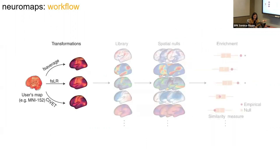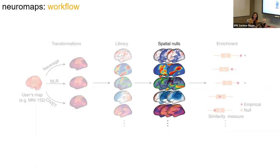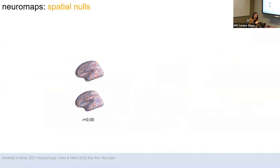At this point, let's say you have a data map you collected and you want to relate it to different phenotypes — gene expression, receptor density, metabolism, functional maps, etc. You have the transformations to make that possible. You could put them all in the same space and just calculate your correlation coefficient with a parametric p-value and walk out the door. But I'm going to make the case for applying spatial null models instead, because the brain is spatially autocorrelated.